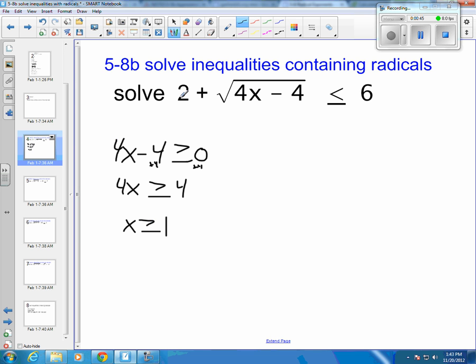And then the second step is we actually have to solve the equation. So I'm going to get the radical by itself by subtracting 2 from both sides. So that means the square root of 4x minus 4 has to be less than or equal to 4. Then you square both sides, so 4x minus 4 has to be less than or equal to 16.